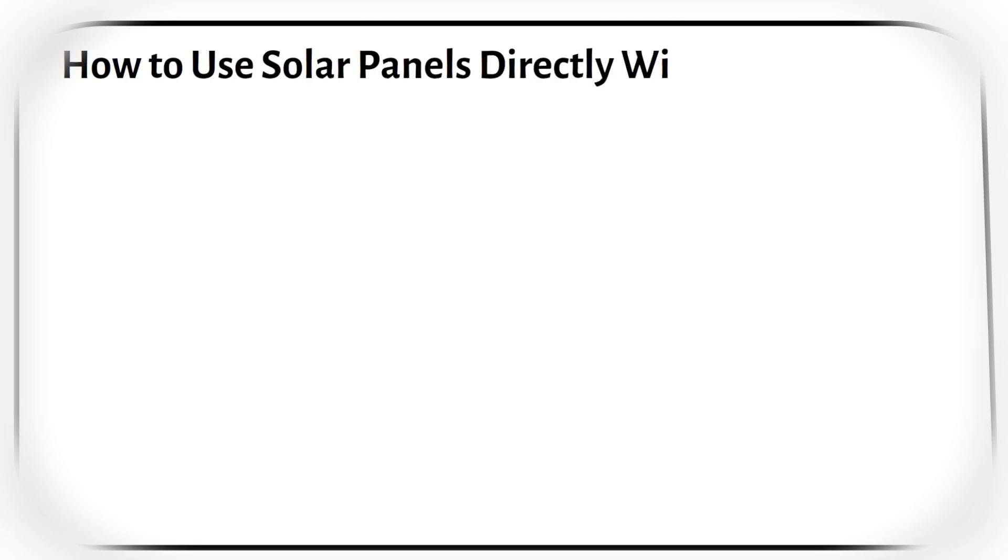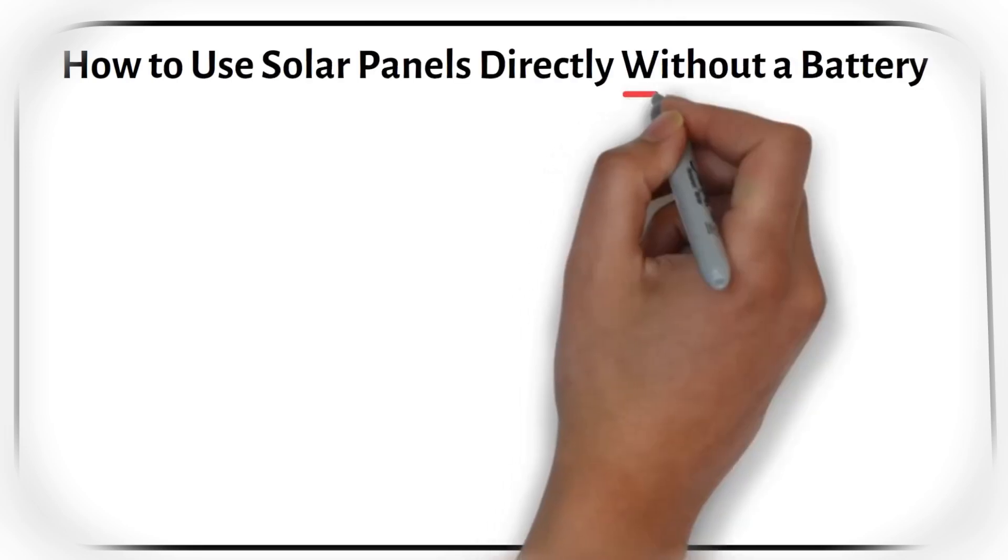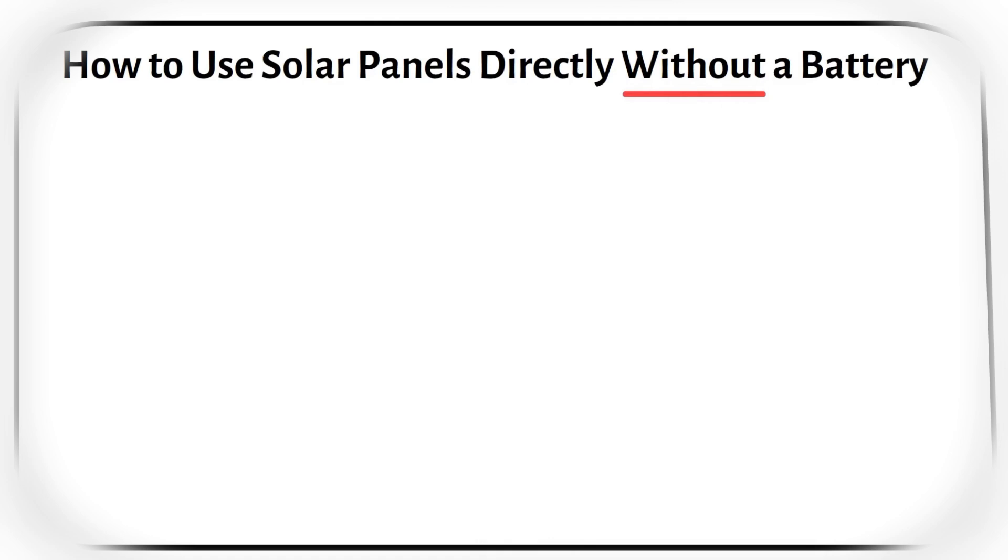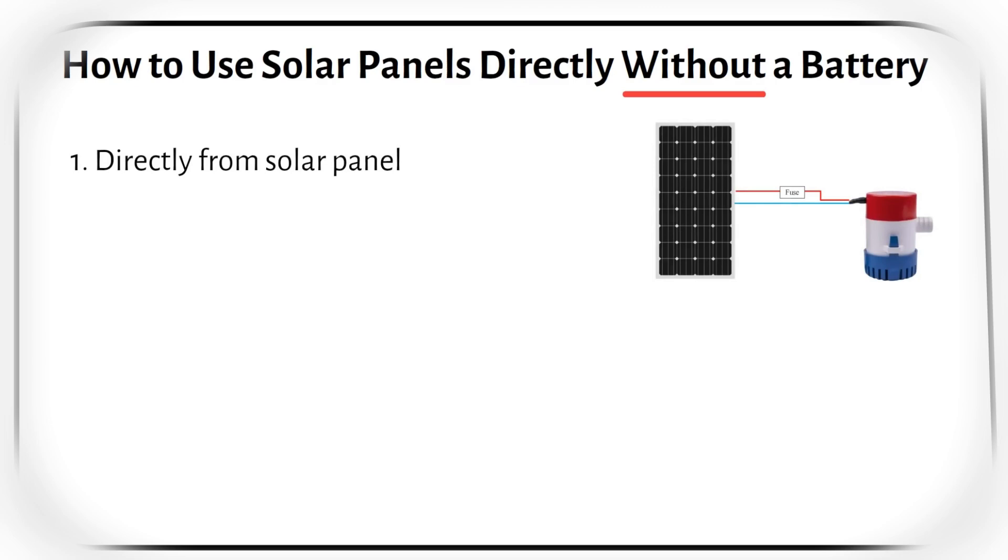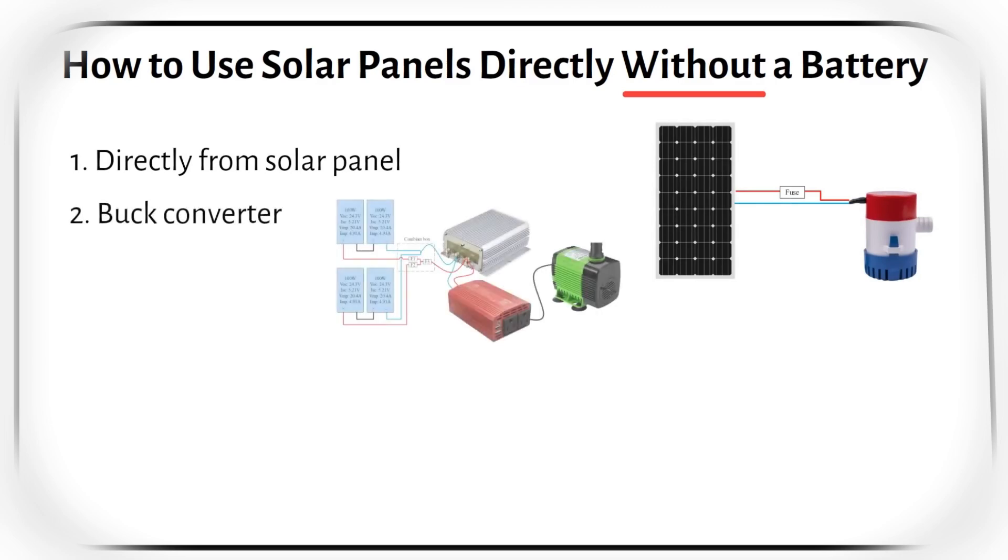In this video, I will show you how to use solar panels directly without a battery. There are several methods to accomplish this: directly from the solar panel, through a buck converter, with a PWM converter, with a larger pump controller, or through an off-grid inverter. Let's start with the easiest.